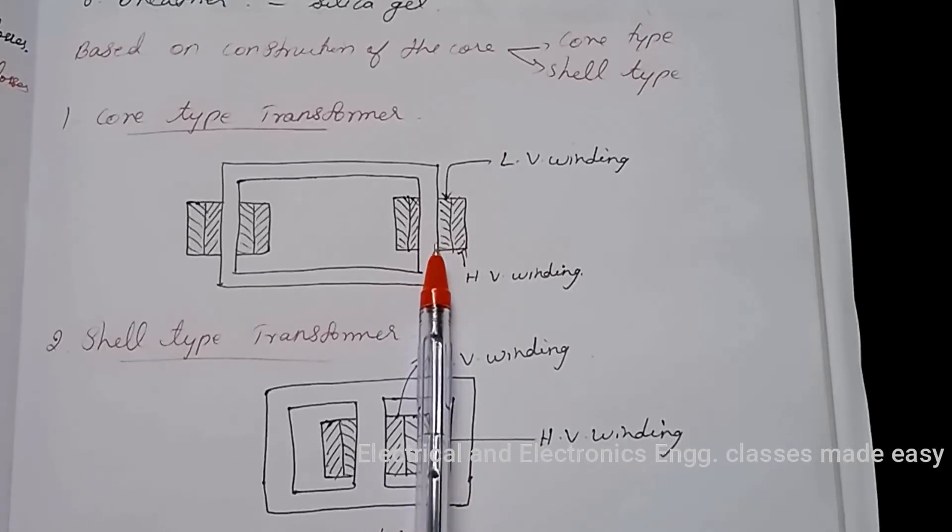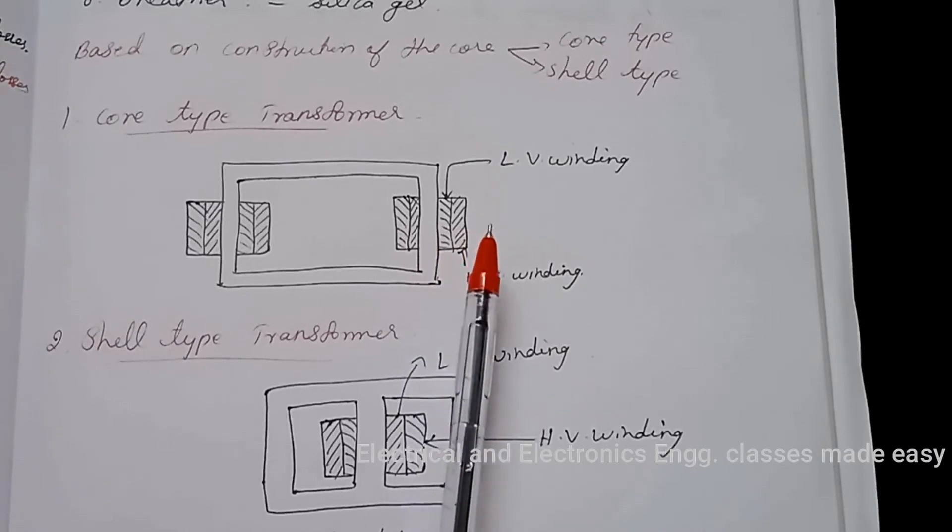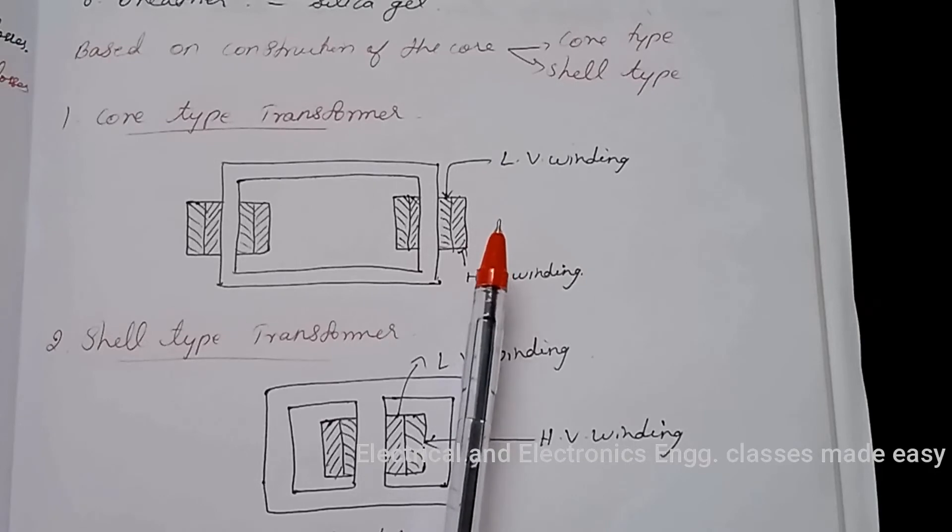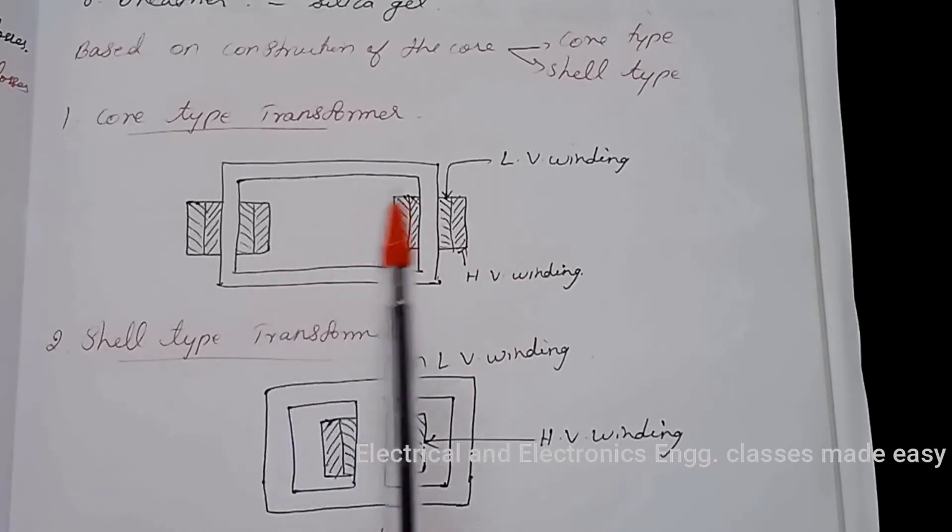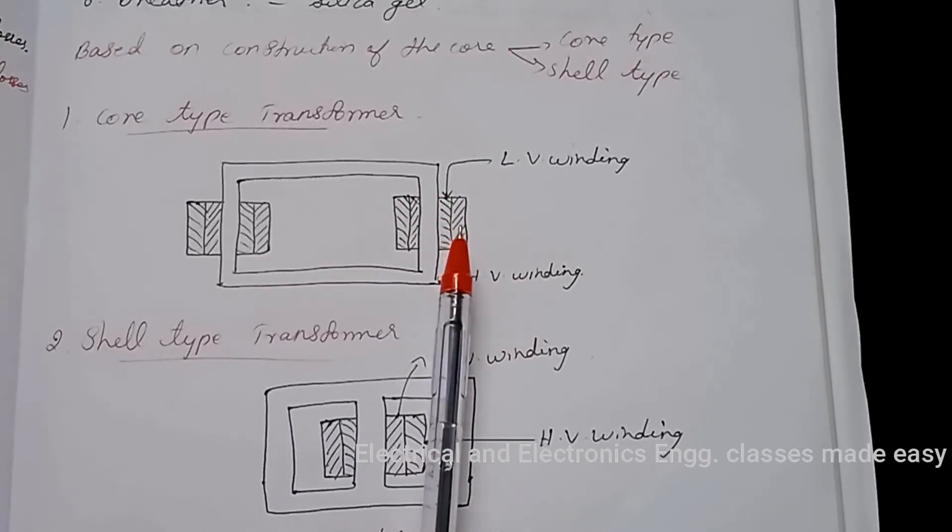For small core type transformers, the laminations are cut in the form of L-shaped strips. In order to minimize reluctance of magnetic path, alternate layers are stacked differently and continuous joints are eliminated.